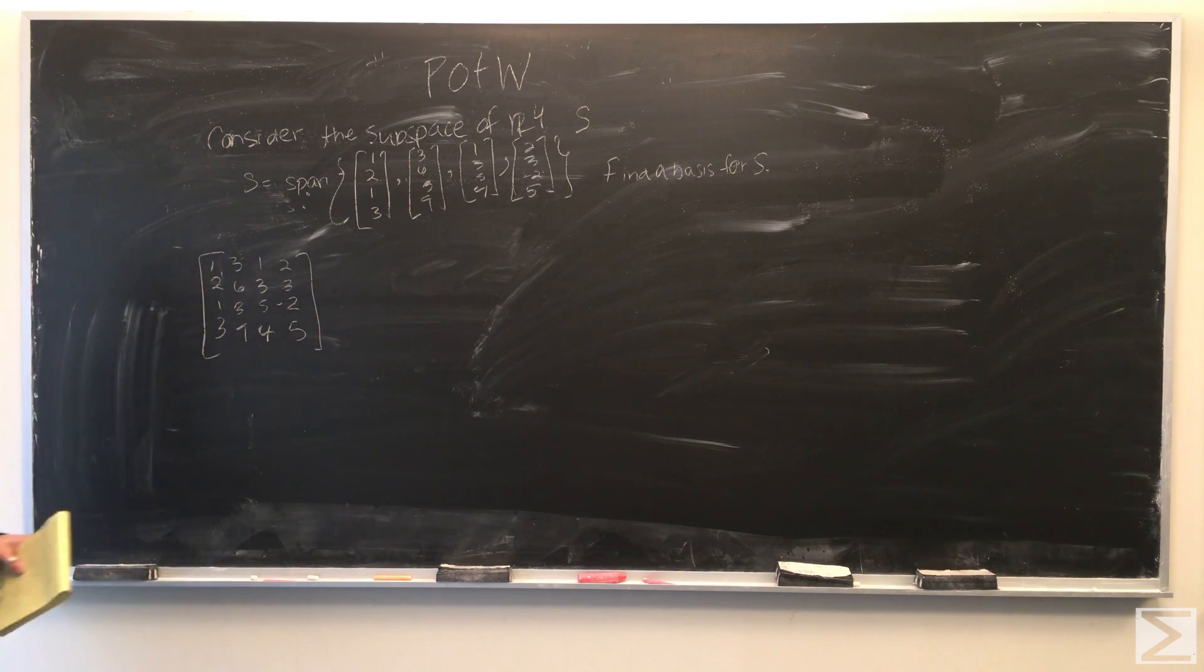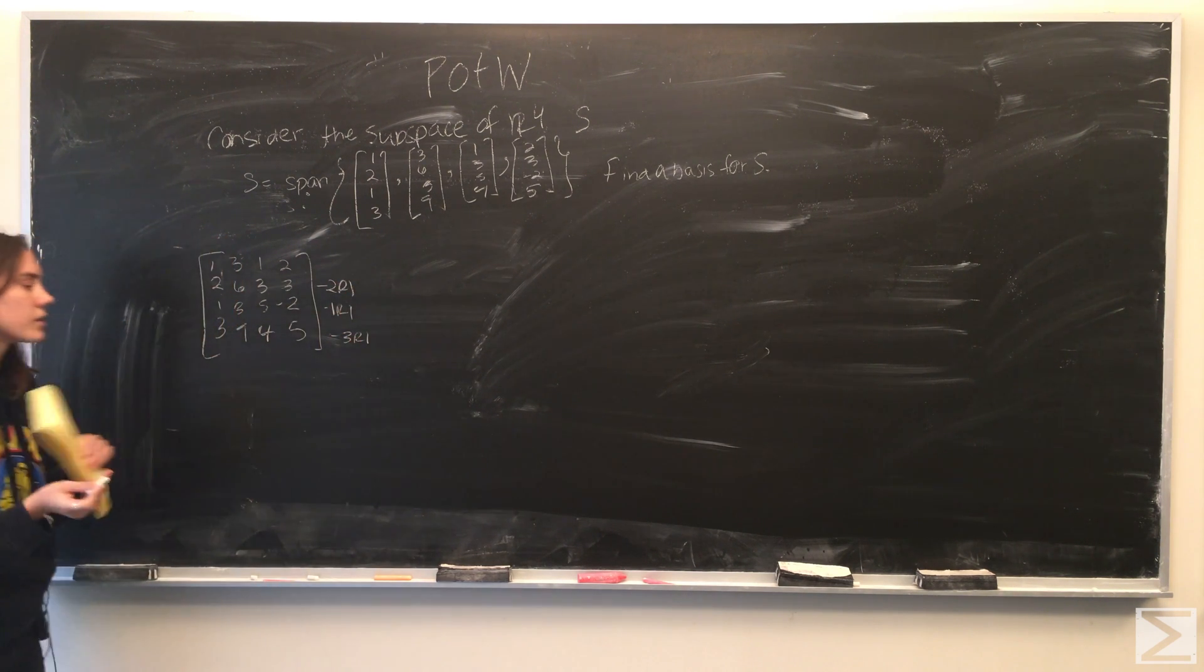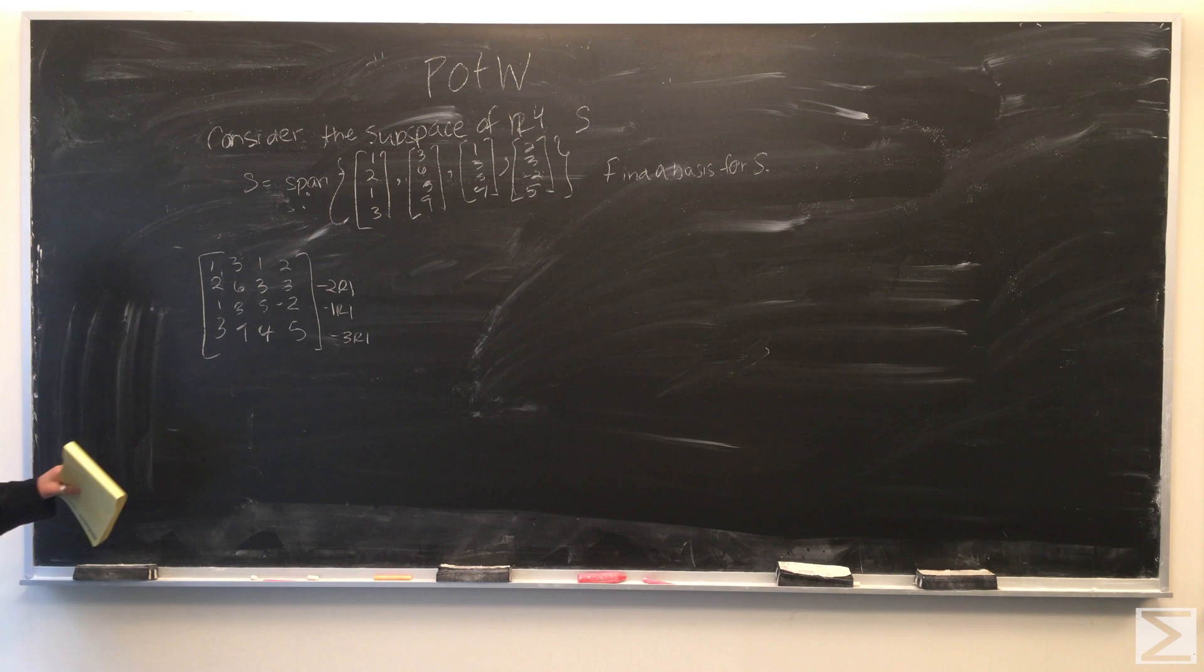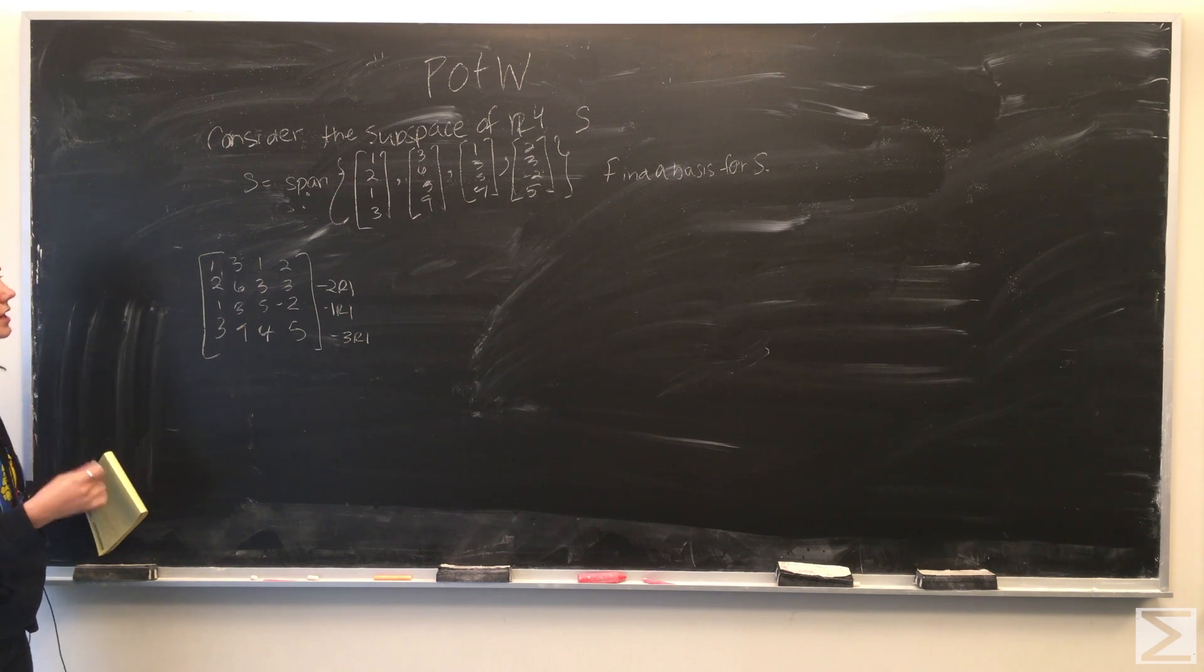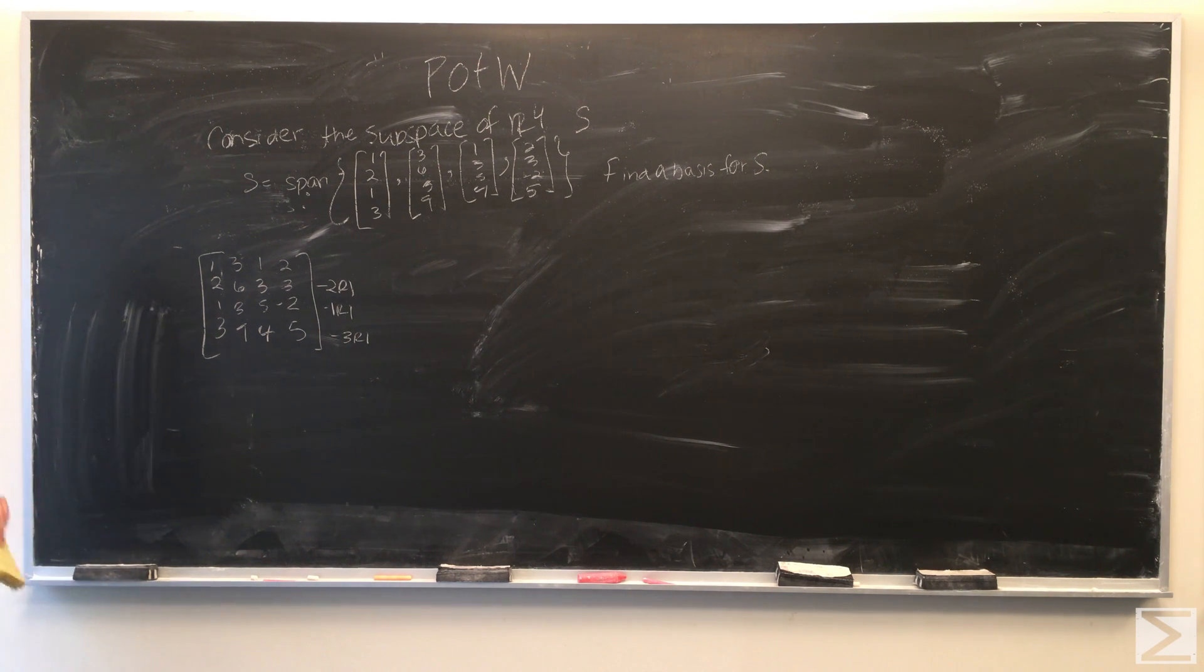So to begin, we're first going to subtract the first row from the other rows. For the second row we want to subtract two times the first row, for the third row we want to subtract one times the first row, and for the fourth row we want to subtract three times the first row.